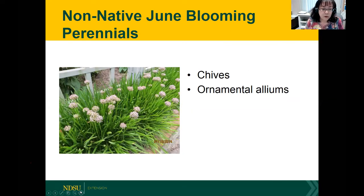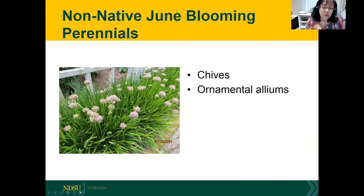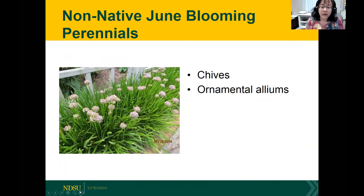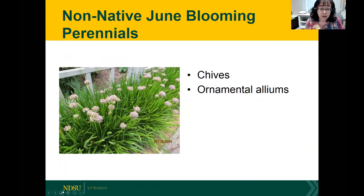Other perennials to include for June bloom — don't forget some of our herbs. Chives happen to be a perennial, and though a lot of people view it as a nuisance, the flowers can be quite beneficial. Chives can spread quite vigorously, but here it's confined by the sidewalk. Related plants would also include our alliums, which are very good for pollinators.